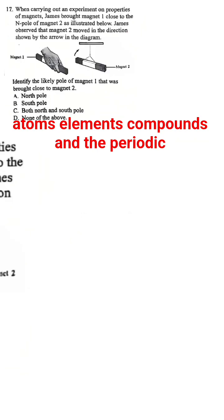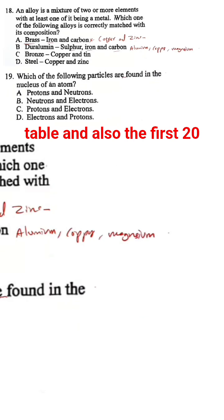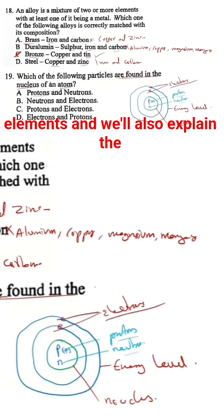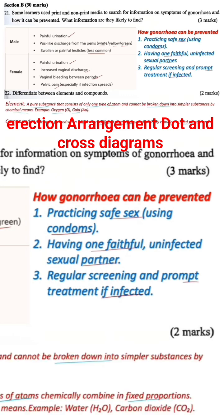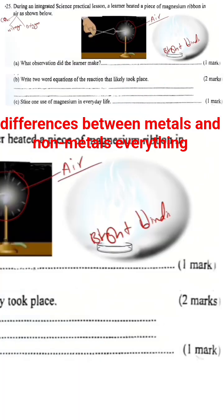we will get an in-depth look at atoms, elements, compounds and the periodic table and also the first 20 elements and we will also explain the electron arrangement, dot and cross diagrams, atomic number, mass number and the differences between metals and non-metals.